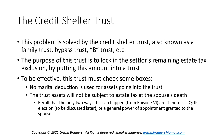The purpose of this credit shelter trust is to pool everybody together — spouse and descendants — while locking in your remaining estate tax exclusion by putting this amount into a trust. Because typically, if you put assets into a trust where a spouse is a beneficiary, you're not going to use the marital deduction unless that trust is set up in a certain way to qualify automatically or electively for the marital deduction. That'll be the discussion for next time.